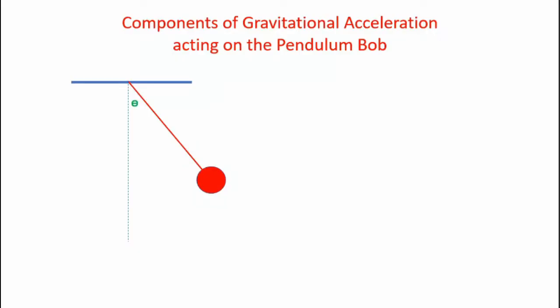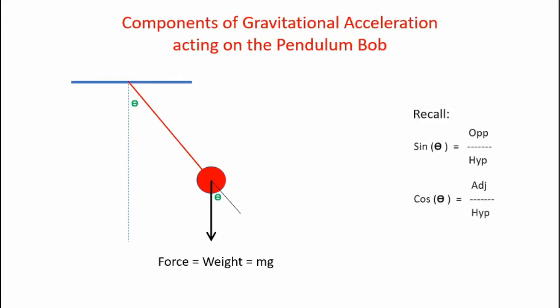Let's start off by looking at the components of gravitational acceleration acting on the pendulum bob. Here's my pendulum bob deflected at some angle theta from the vertical. The bob is being acted upon by gravity, so it's a downward force equal to the weight, which is equal to mass times acceleration due to gravity. Relying on basic geometry, the theta angle shows up on the bob. Using trigonometry, we can break down the forces parallel and perpendicular to the string. The force parallel to the string is mg cosine theta, and the force perpendicular to the string is mg sine theta.